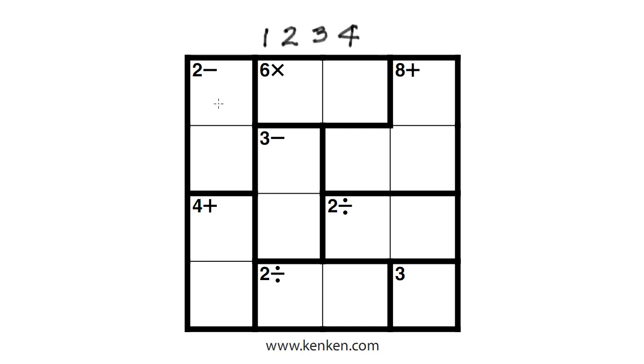These two squares right here, those two numbers, have to have a difference of two. So, for instance, it could be the numbers two and four, or it could be the numbers three and one. But they can be also in either order. You don't have to have the larger number on the top.